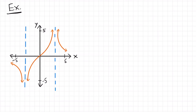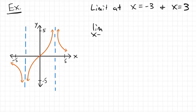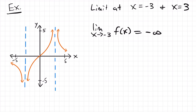Next we're going to look at this example, interested in the limit at x equals negative 3 and 3. Looking at the limit as x approaches negative 3 — as we get closer and closer from the right side, we are getting smaller and smaller values of y, reaching negative infinity from the right. From the left side of the function, we are also going towards negative infinity. Both sides agree, so the limit as x approaches negative 3 from both sides is negative infinity.